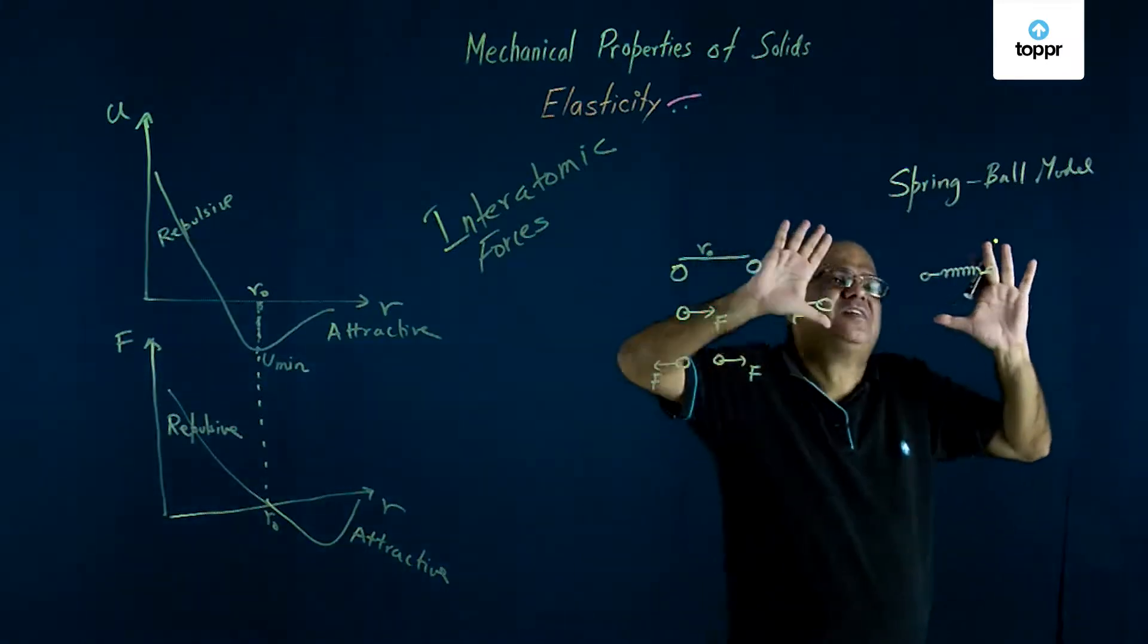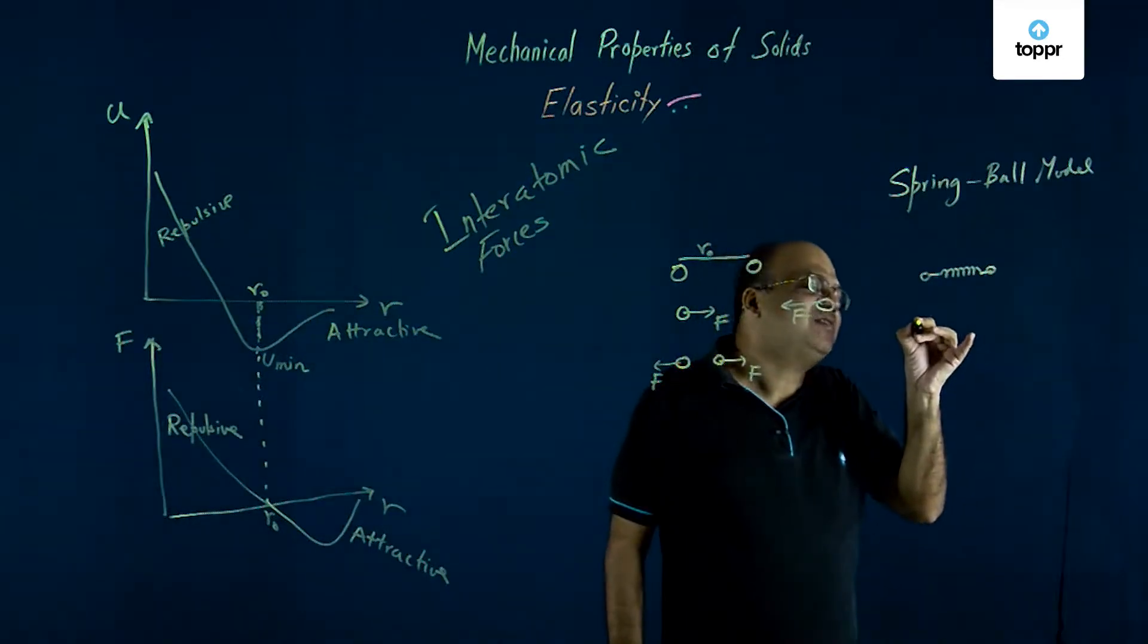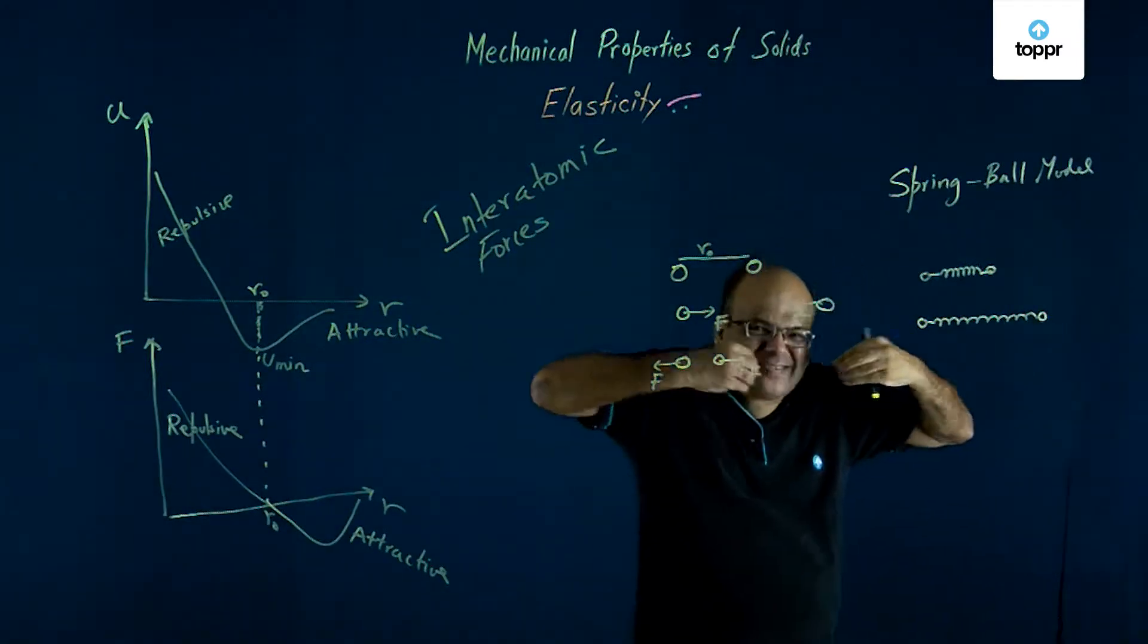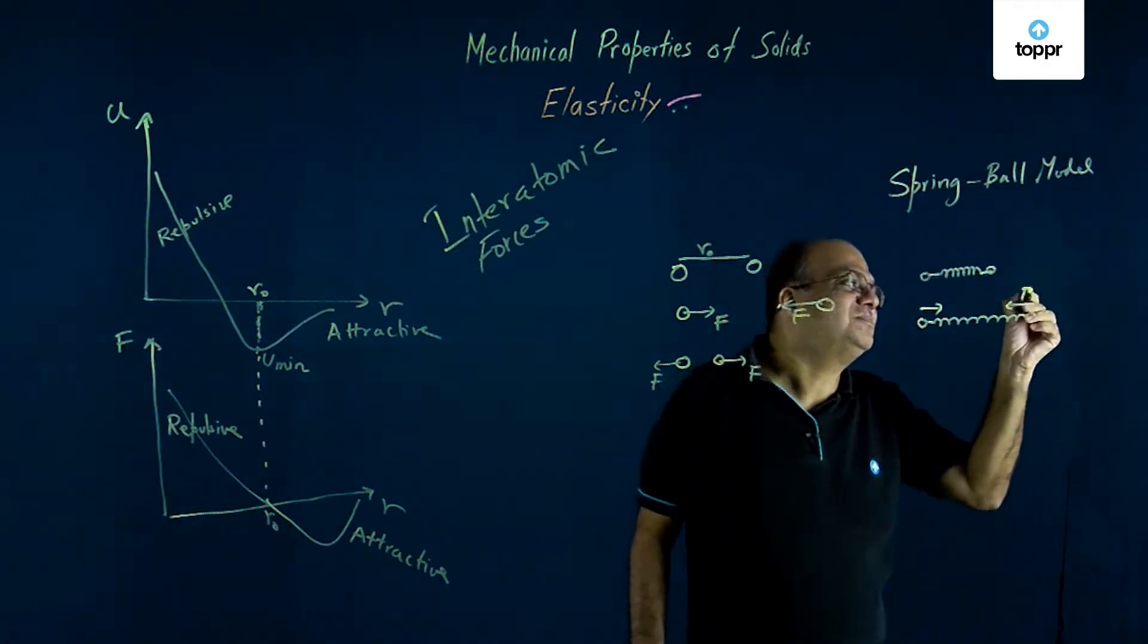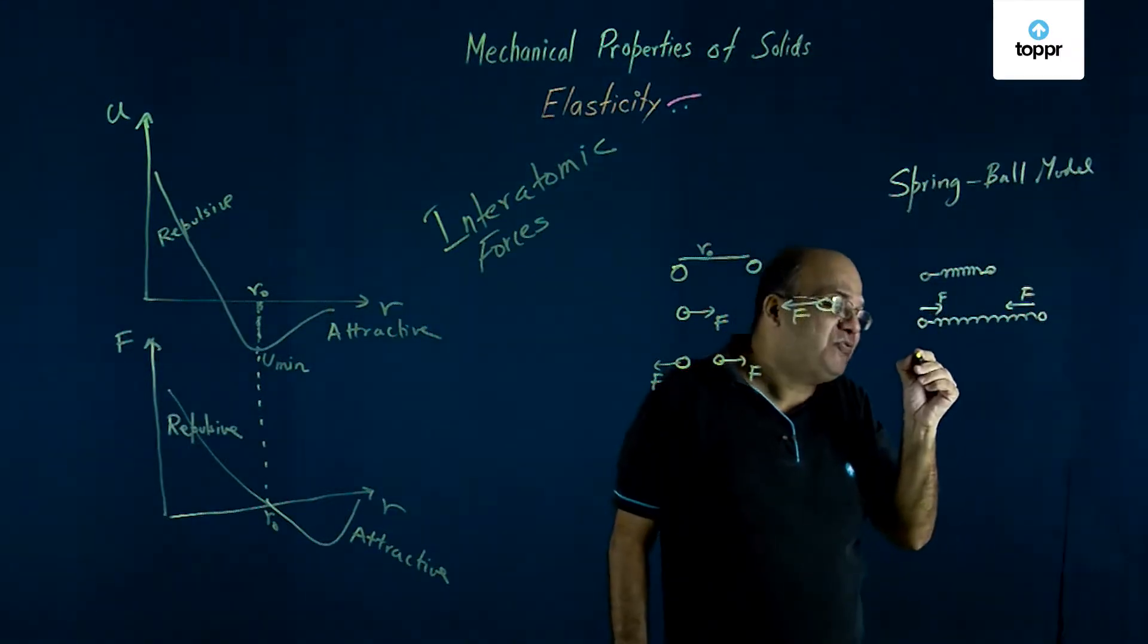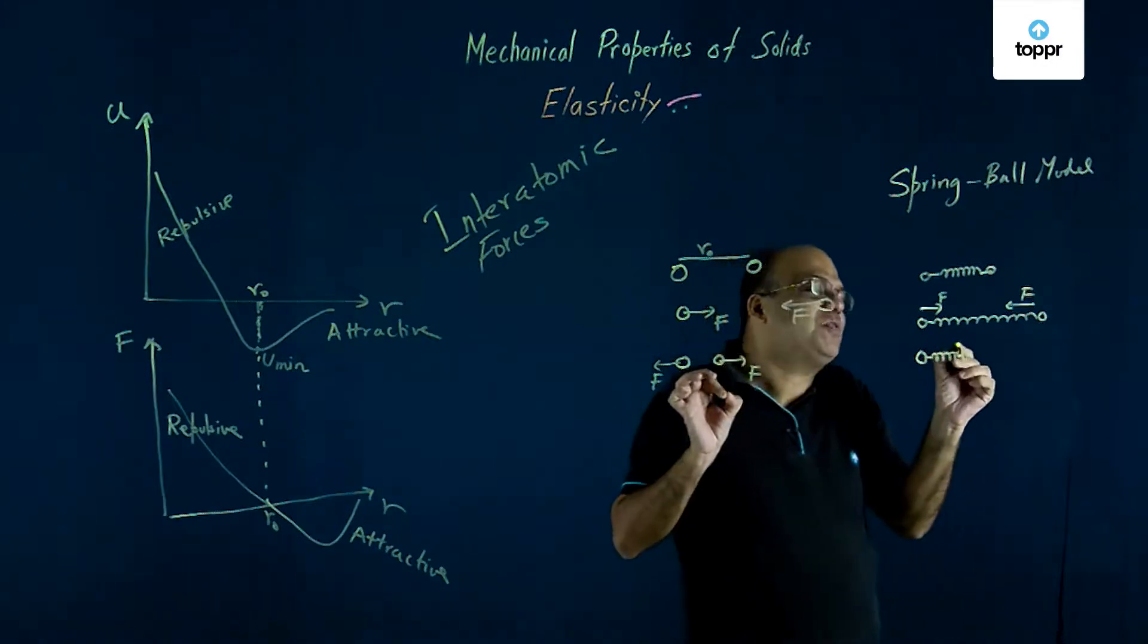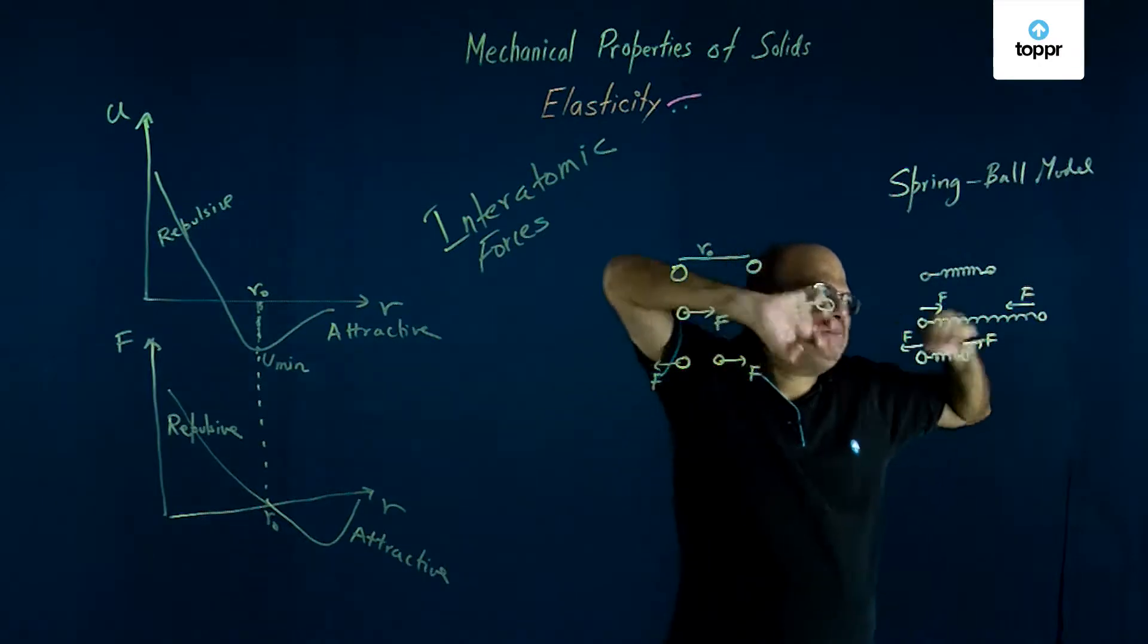So, at normal separation the spring is at its natural length. If a tensile force increases the length of the spring, that is basically the spring is getting extended. Now the force will be attractive, and these atoms will come back to this position. If we compress this spring, that means to bring the atoms closer, then the interatomic forces, the spring forces as you are imagining them to be, will be repulsive.